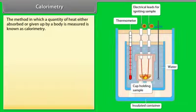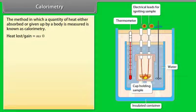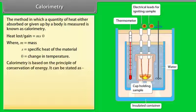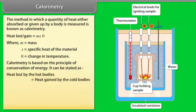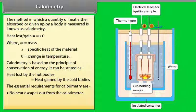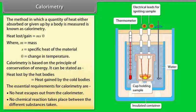Calorimetry: The method in which the quantity of heat absorbed or given up by a body is measured is known as calorimetry. Heat loss or gain = MSθ, where M is mass, S is specific heat of the material, and θ is the change in temperature. Calorimetry is based on the principle of conservation of energy: heat lost by hot bodies equals heat gained by cold bodies. Essential requirements are that no heat escapes and no chemical reactions take place.